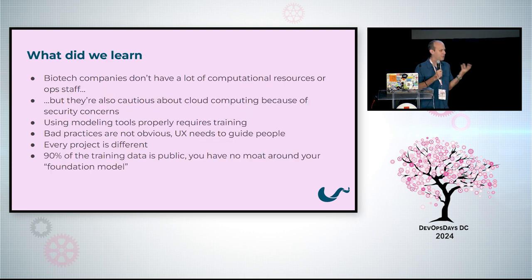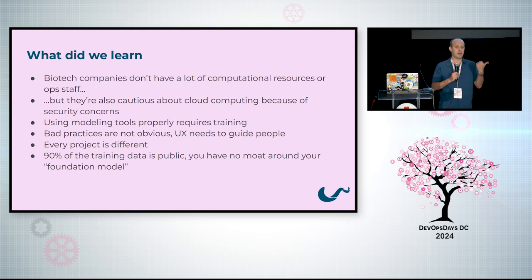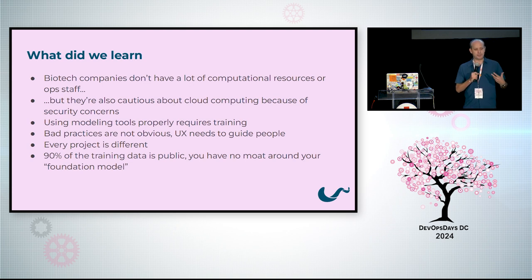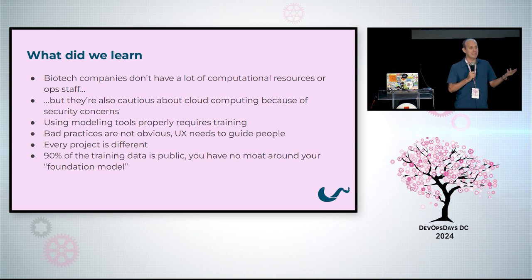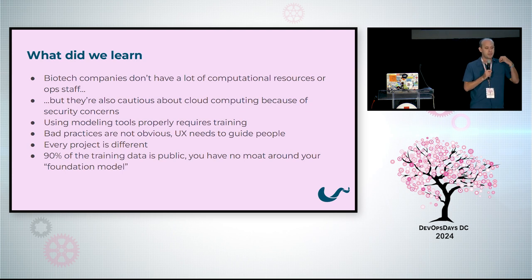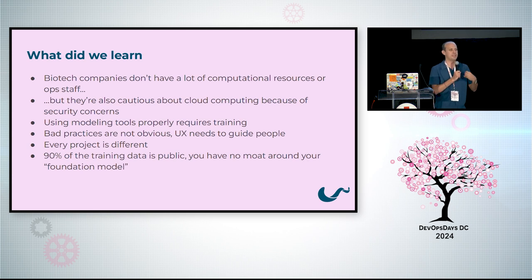We learned some interesting things. Biotech companies don't have a lot of computational resources — they want to do computational biology but don't necessarily have a cluster or an ops team. Cloud computing would be great, but they're often really cautious about it because they have valuable intellectual property and are scared of what might happen to it. We also learned that all these molecular modeling tools, and especially the new AI tools, require a lot of training to interpret the results. They're often easy to use, but they're hard to deploy and hard to understand — and the bad practices aren't necessarily obvious. You can really mislead people. So beyond just training, the UX needs to guide people into making the right decisions and not down the path of misusing these tools.